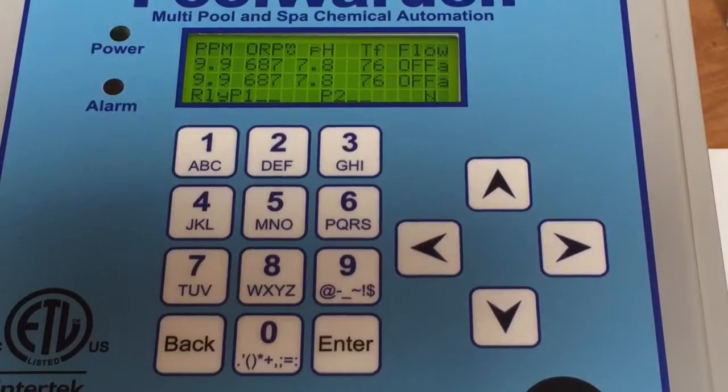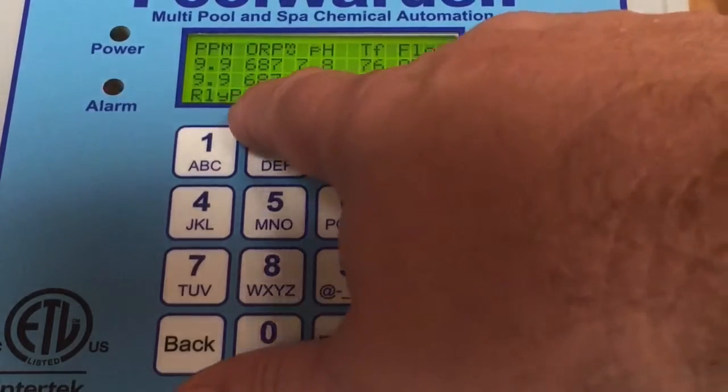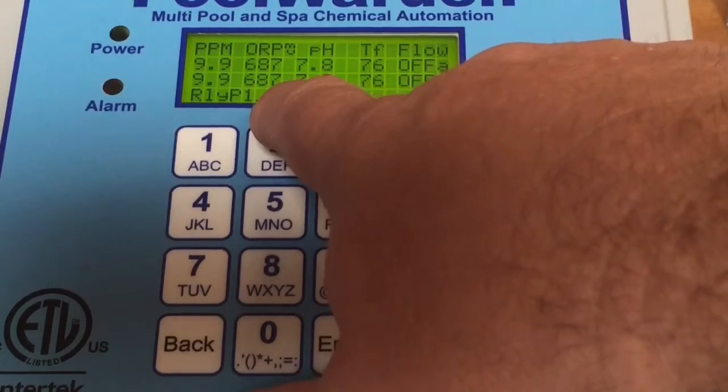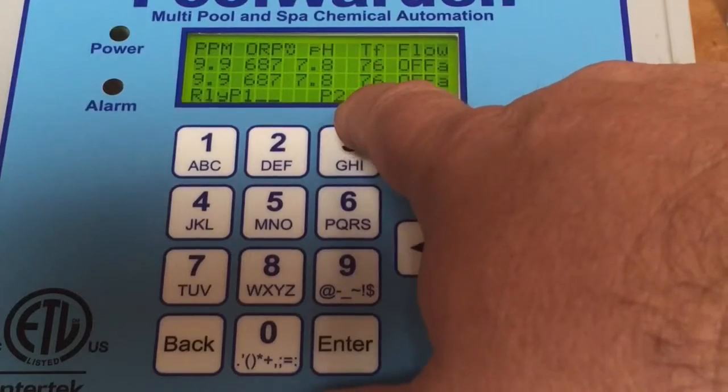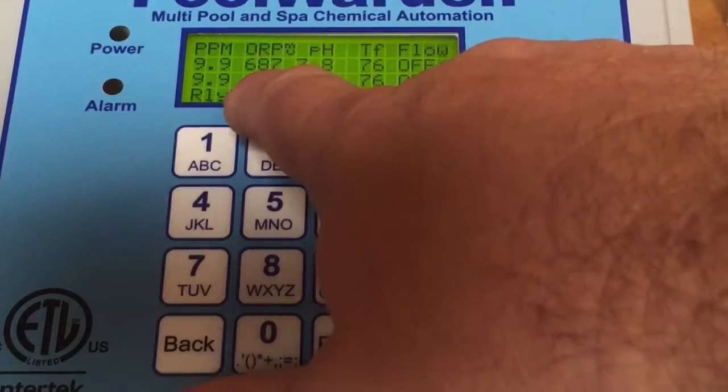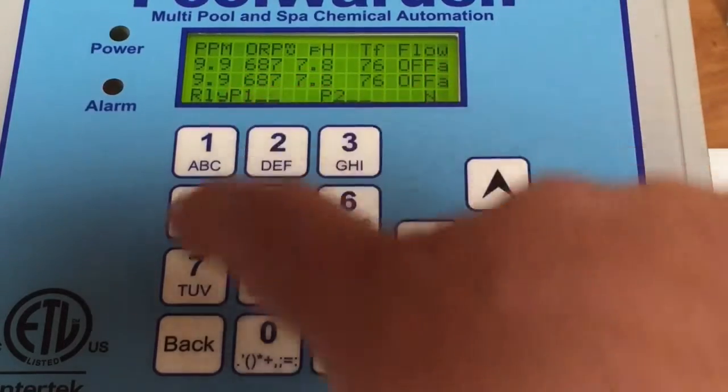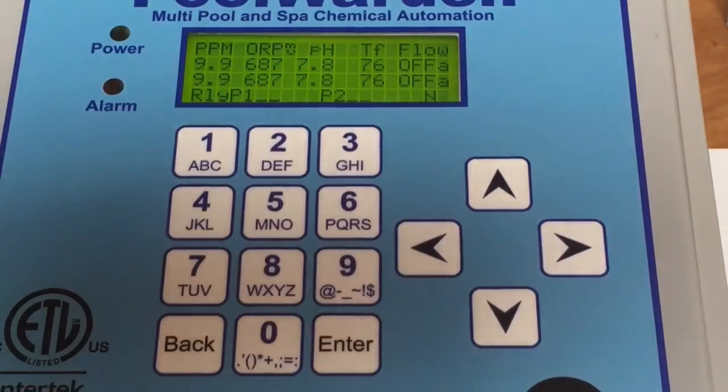Also, if you see an O in any one of these spots—this would be your ORP, this would be your pH on pool one, and ORP and pH on pool two—if there's an O here instead of the line or the arrows, that means it has gone into overfeed and it will not function anymore until that overfeed is reset.